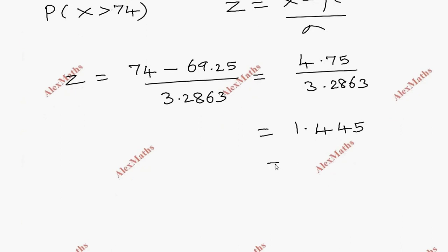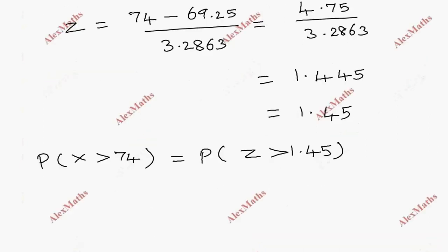We round this to 1.45. So P(x > 74) becomes P(z > 1.45).